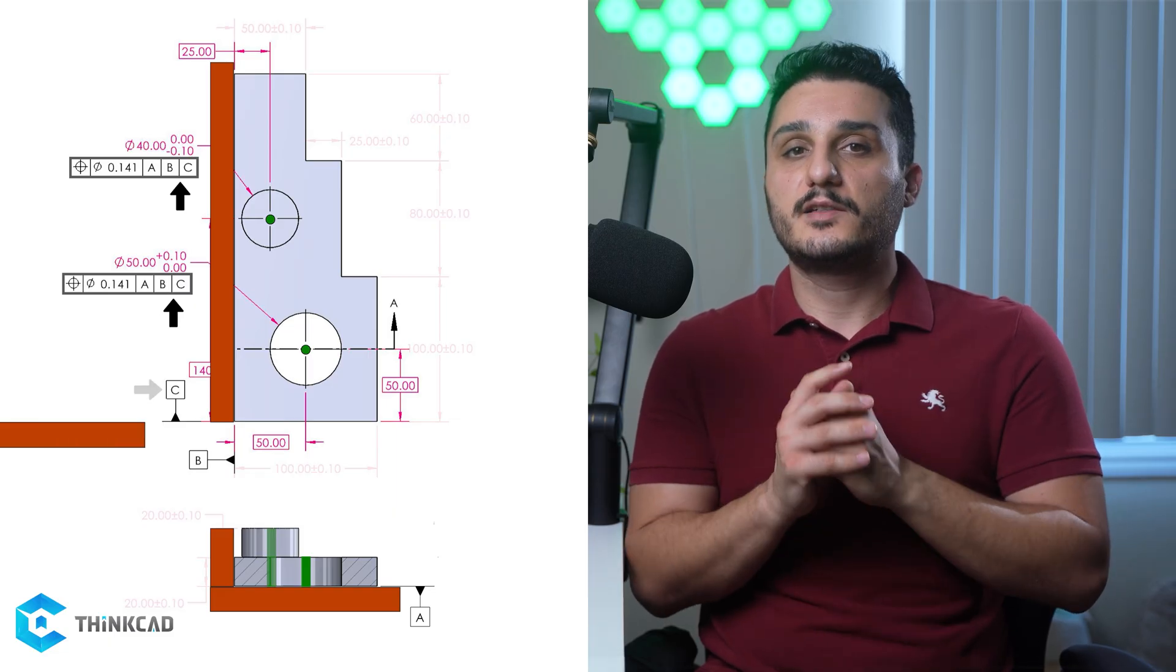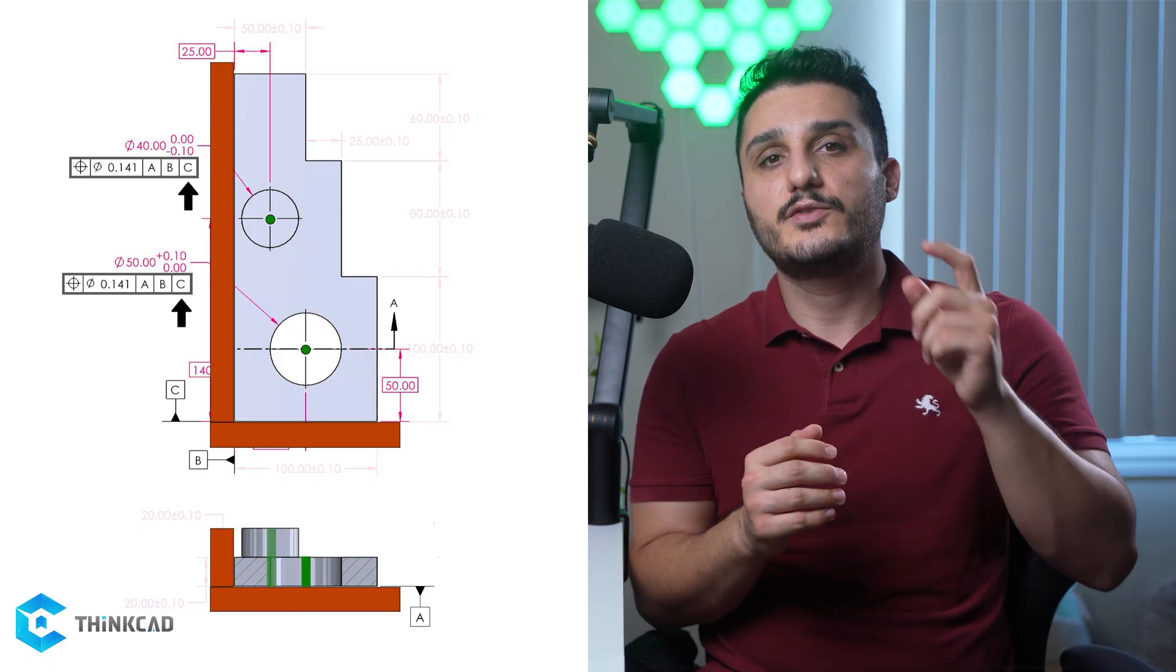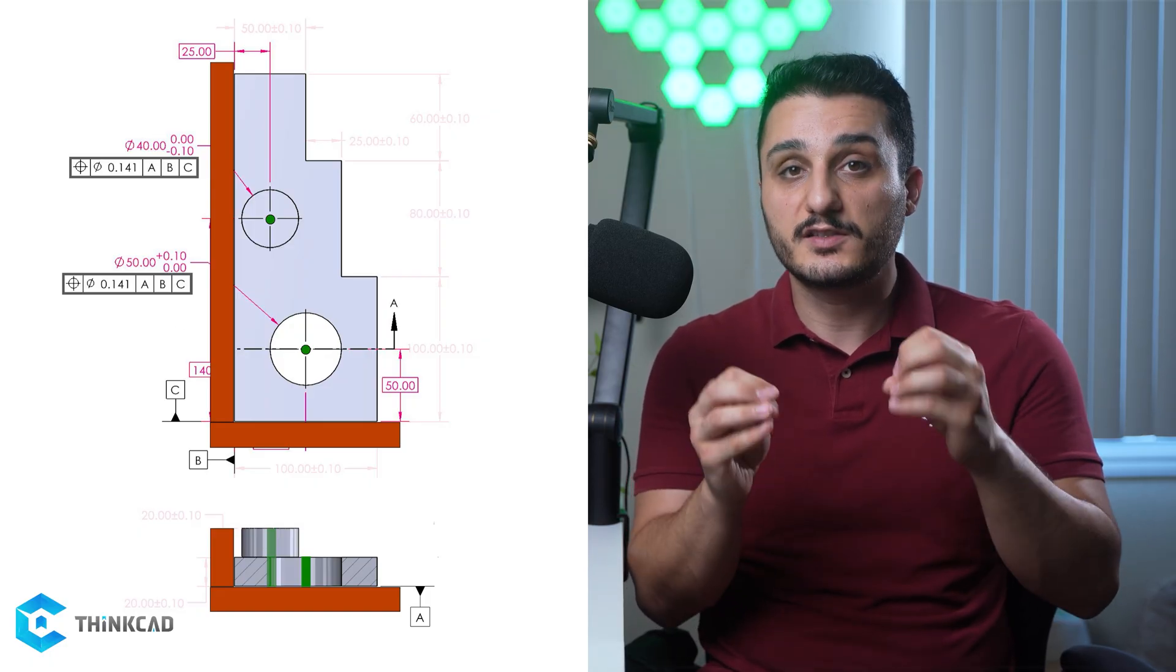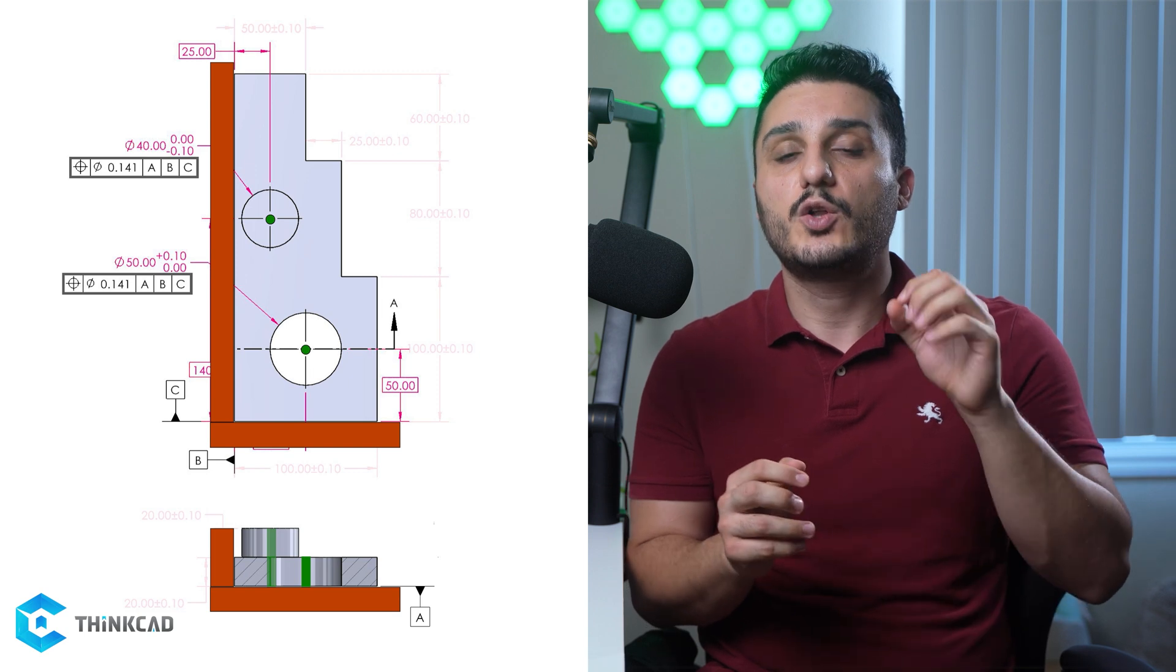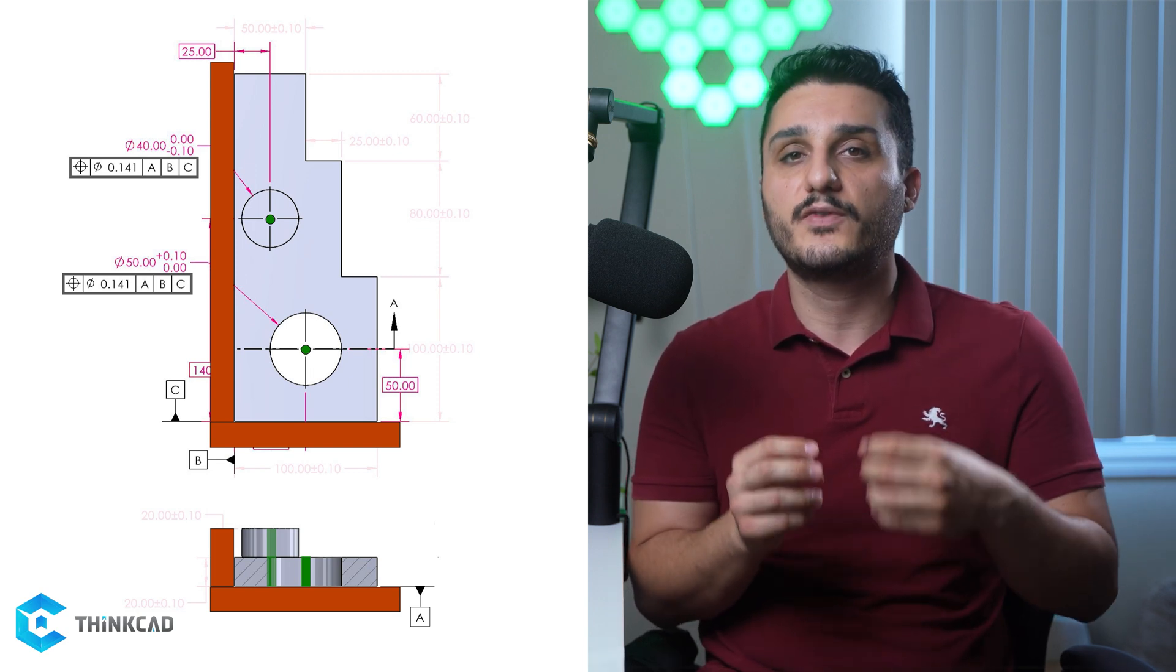Then you can limit the last datum C, which gives you a minimum of one point of contact, limiting your last degree of freedom. Remember that the order that you use your datums does make a difference, and you should always pick the more important surfaces first based on assembly or functioning of your part.